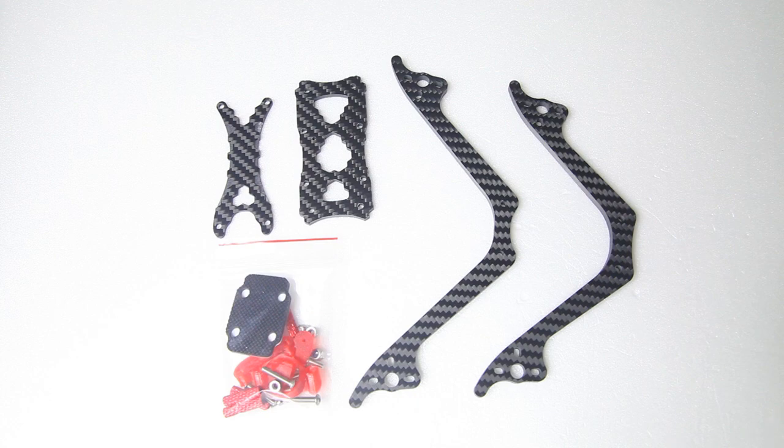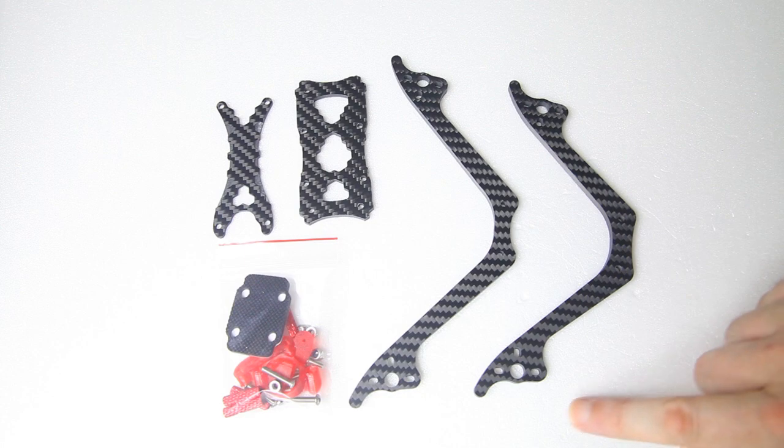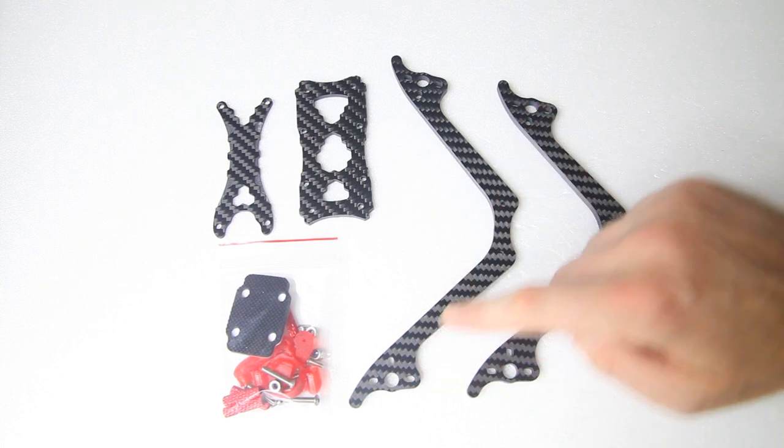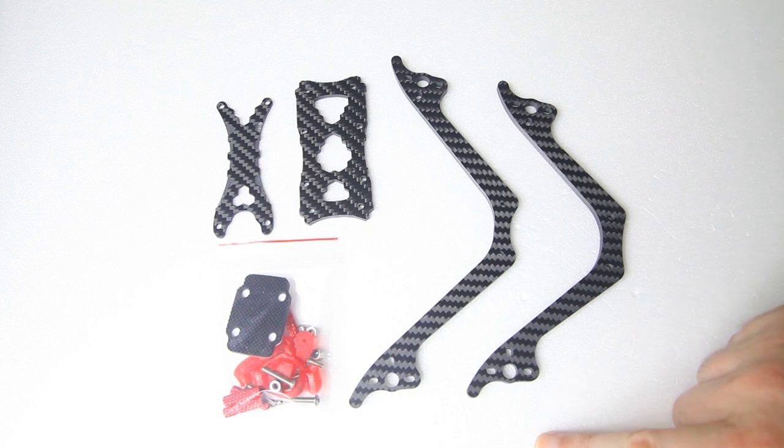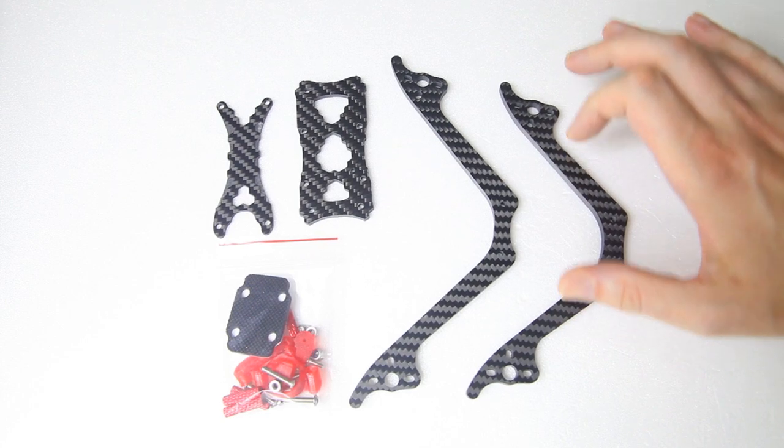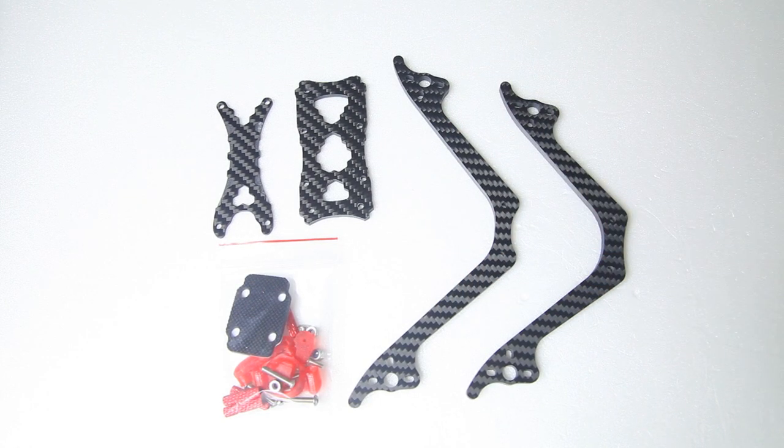Alrighty, here are the components for our Rotorama WASP frame. Now some of this frame is conventional and actually pretty similar to the Hyperlite Floss 3.0. However, there are some distinct differences. You have noticed that this quadcopter only has two arms. Well, it has four arms of course, but these are boomerang arms.